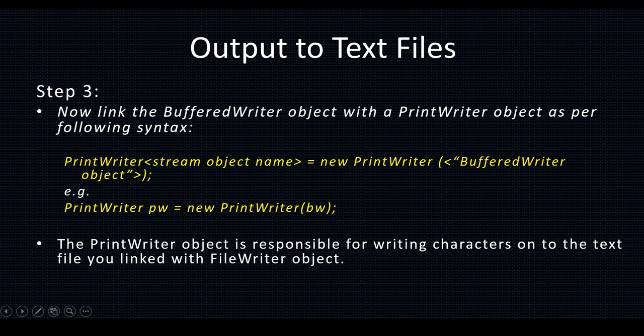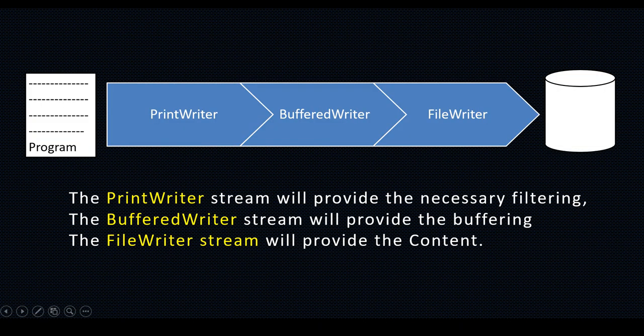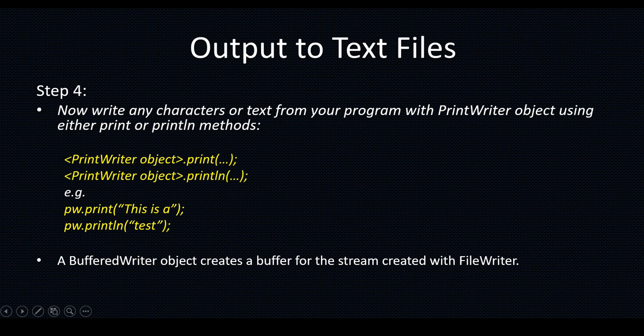The PrintWriter object is responsible for writing characters onto the text file linked with the FileWriter object. In summary: the PrintWriter stream provides the necessary filtering, the BufferedWriter stream provides the buffering, and the FileWriter provides the actual file connection. Step 4: after completing the setup, write any characters or text from your program using the PrintWriter object with either the print or println method.